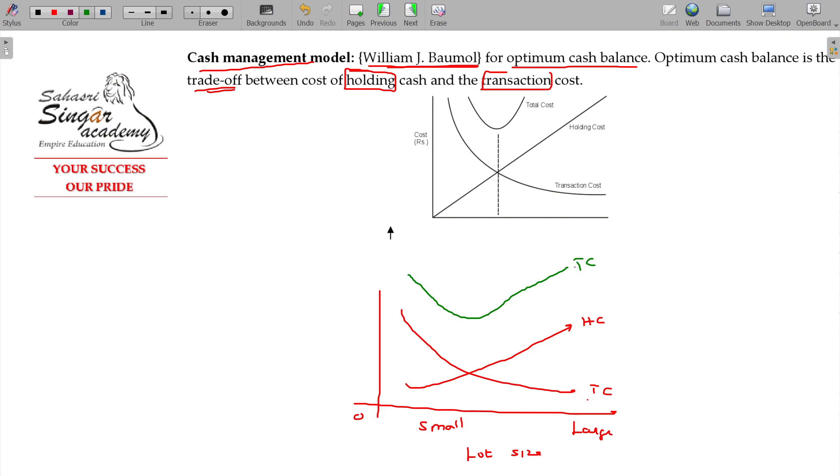That is holding and transaction cost cheaper. That is the size of holding cost, transaction cost intersect.